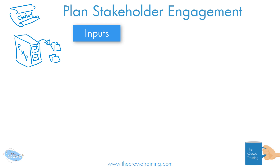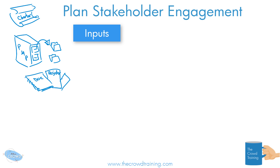As another input, we have various different project documents. If you recall, in the last process we discussed identifying stakeholders — we had a list of those stakeholders, which is our stakeholder register, and we could have even our risk register as an input, as well as other different documents like assumption logs and everything else that we are gathering and using for our project.